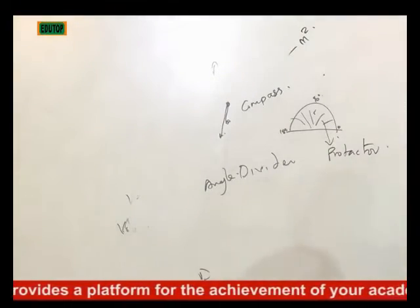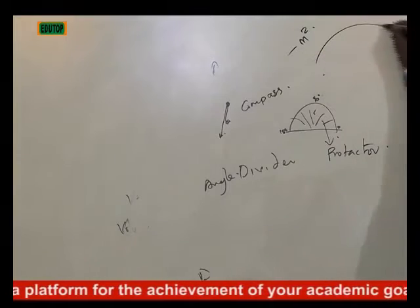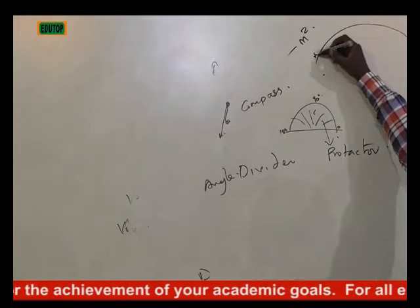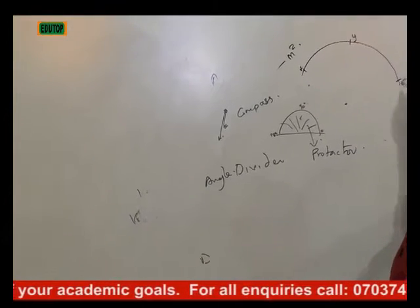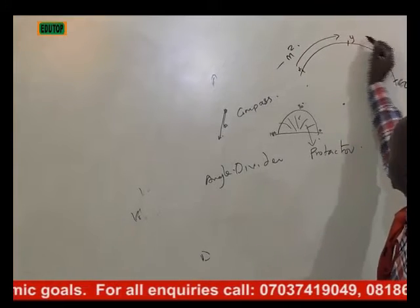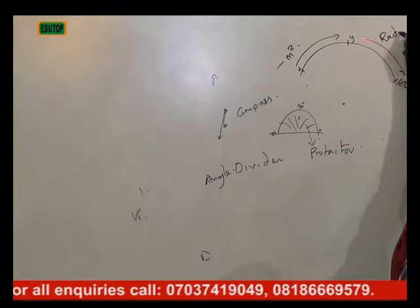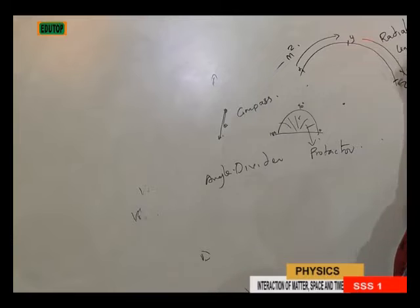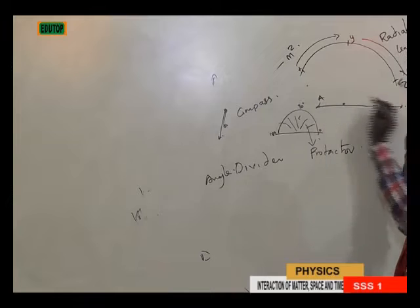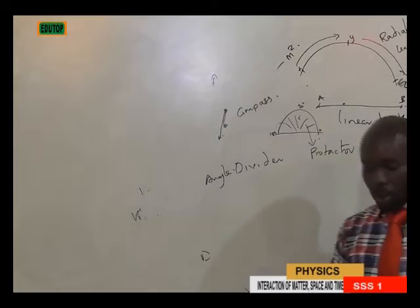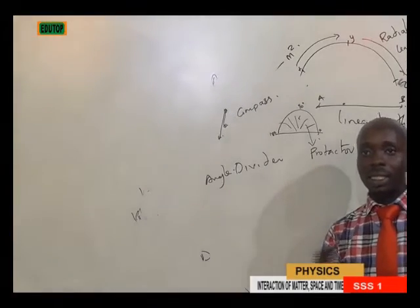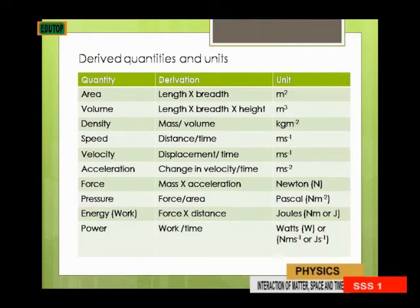When I say radially, it is like a curve — measuring distances from point X to point Y to point Z. This is what we call radial length. If you are measuring distances linearly, that is on a straight line from point A to point B, it is called linear length. All these measurements must be considered and their differences must be known.